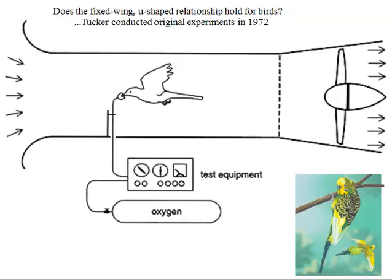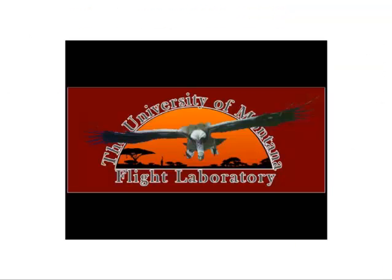That's all fixed-wing aircraft theory. But the fact that minimum flight cost also occurs at intermediate speeds for birds was substantiated by Vance Tucker. His experiments in the 70s documenting that oxygen consumption in budgerigars, these little parakeets, was highest at low and high flight speeds and minimum in the middle. He flew birds in wind tunnels, put a little oxygen mask on them and got those data. Here is what such an experiment looks like today at the University of Montana's flight lab.